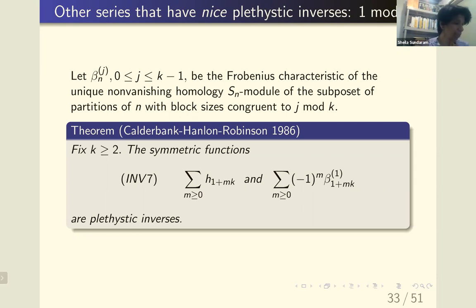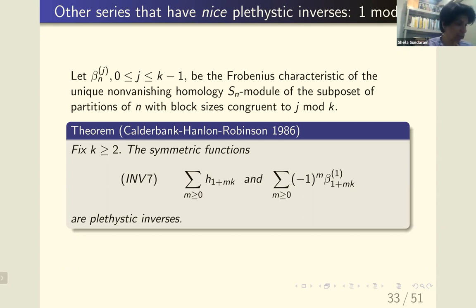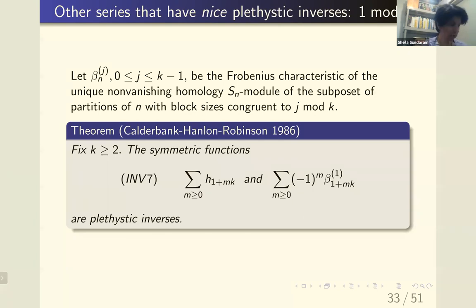This is a result of Calderbank, Hanlon, and Robinson. They computed the unique non-vanishing homology — the top homology of the poset of partitions with block sizes congruent to j mod k. When you look at 1 mod k and take the alternating sum of those top homology modules, the plethystic inverse of that is just the sum of all the trivial modules of degree 1 mod k. That's a pretty amazing result.